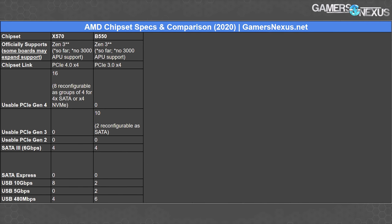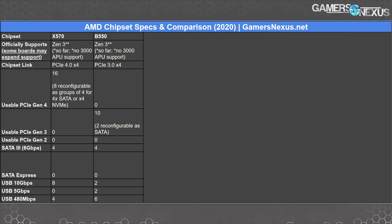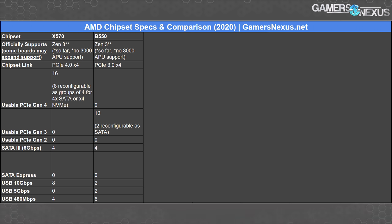Time to talk about the chipset differences. We made a verified table for this and we're going to hide parts of the table as we go to make it easier to follow, uncovering them as we talk about each part. We'll start with X570 and B550 revealed — that's likely the biggest question everyone has right now.